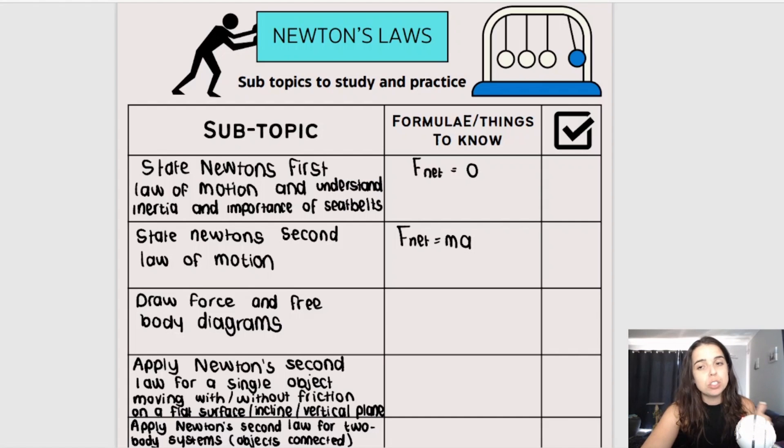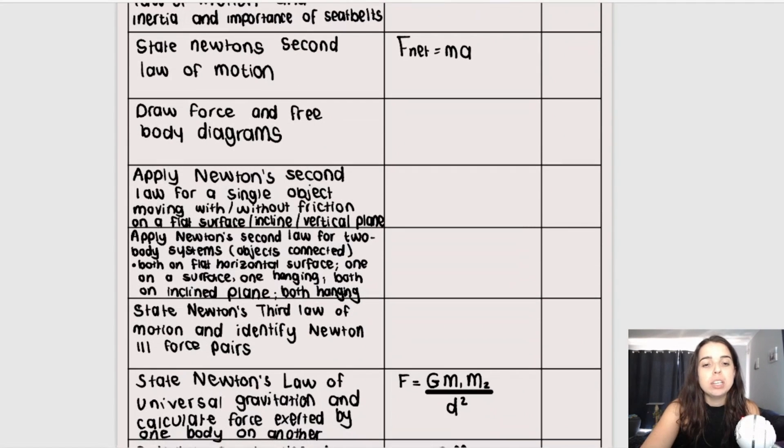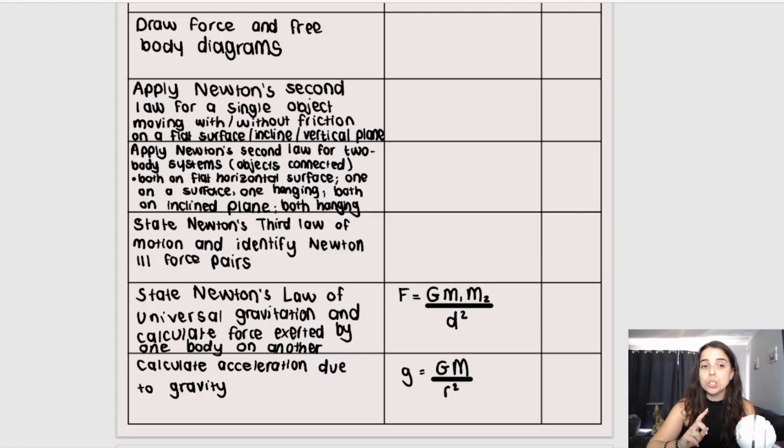But for all these sections, First Law and Second Law, you need to be able to draw your free body diagrams. They're going to help you so much with the calculations. You also need to be able to apply Newton's Second Law and First Law for several objects. So it can be one object on a flat surface. It can be one object on a slope. It can be two objects on a flat surface, two objects on a slope, one object on a table, and the other one dangling over the table on a pulley. Lots of different options.